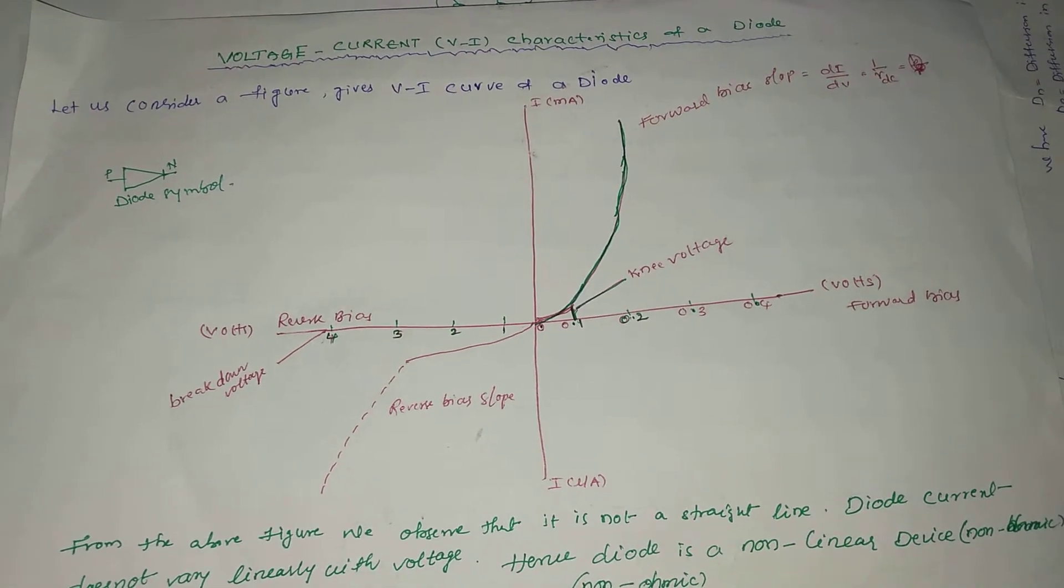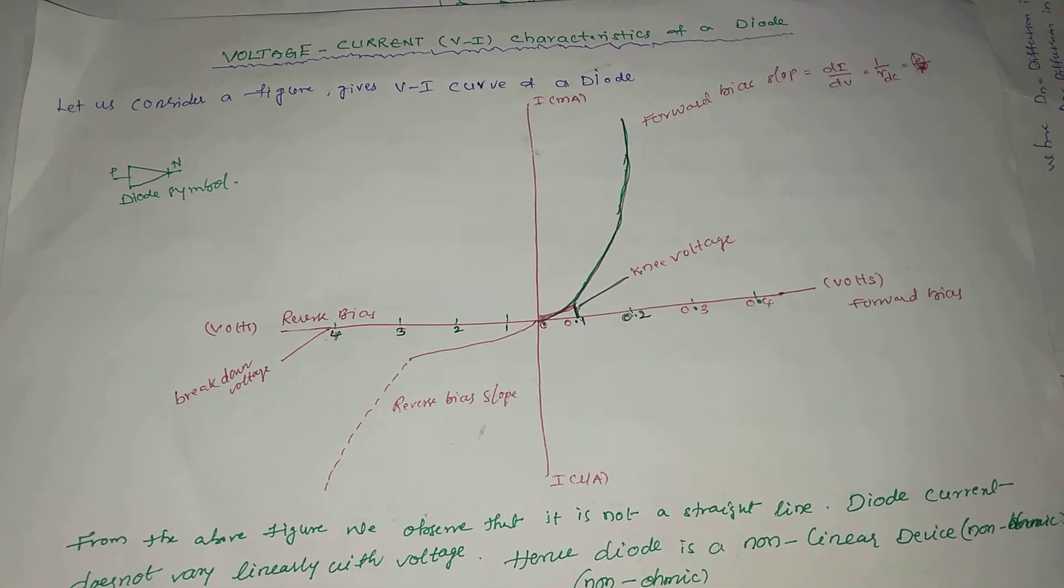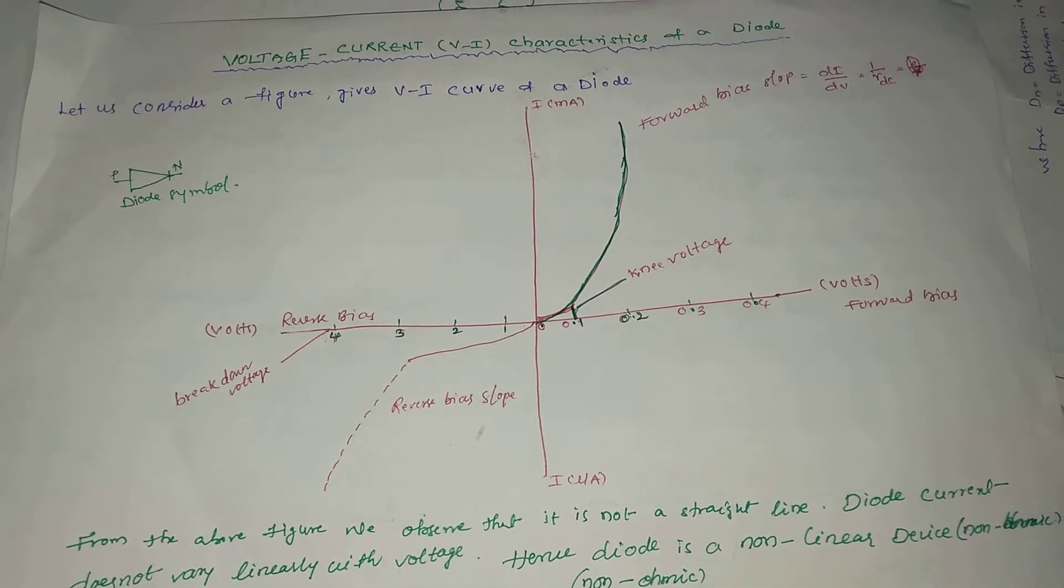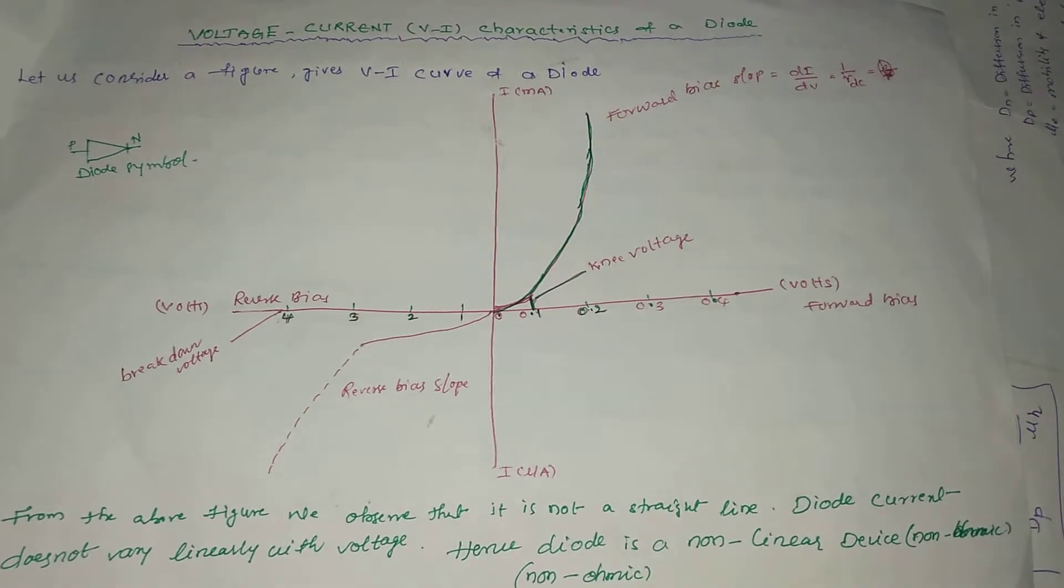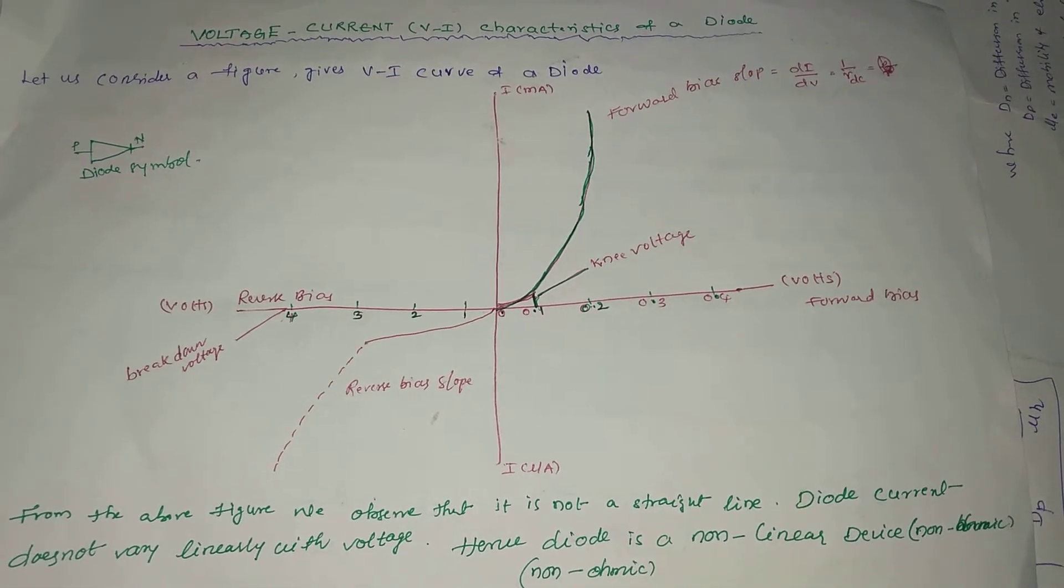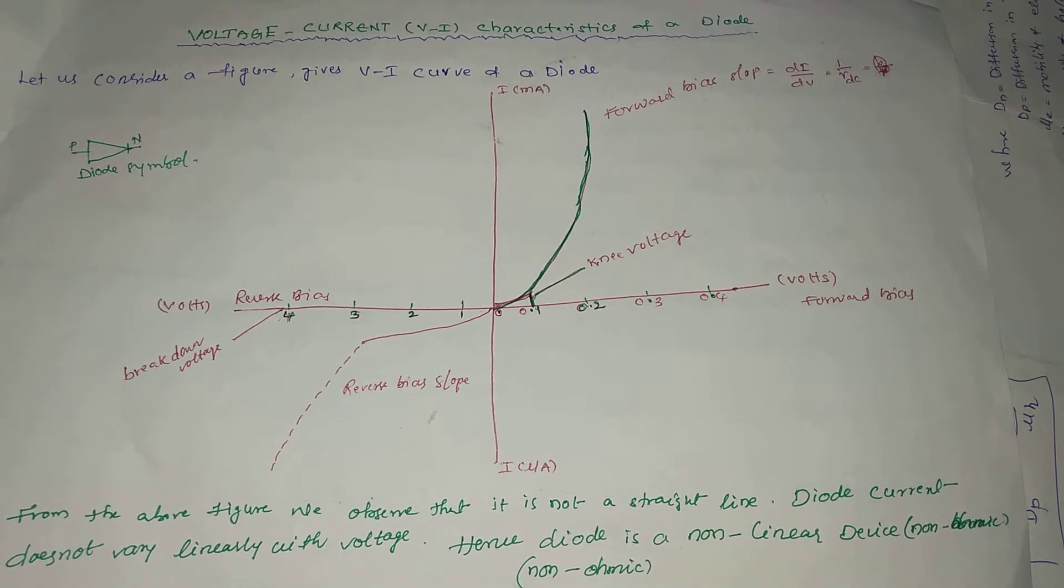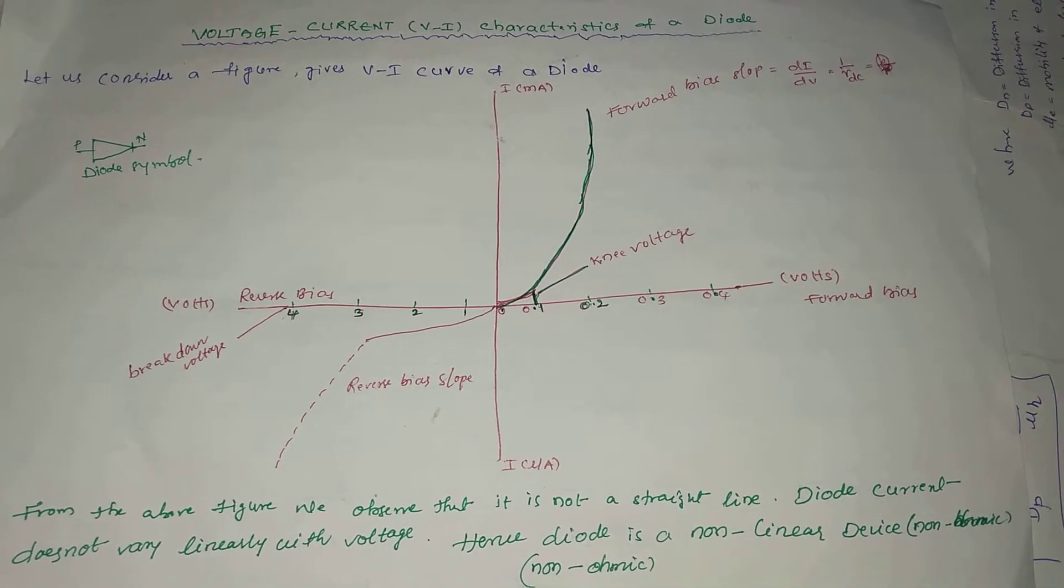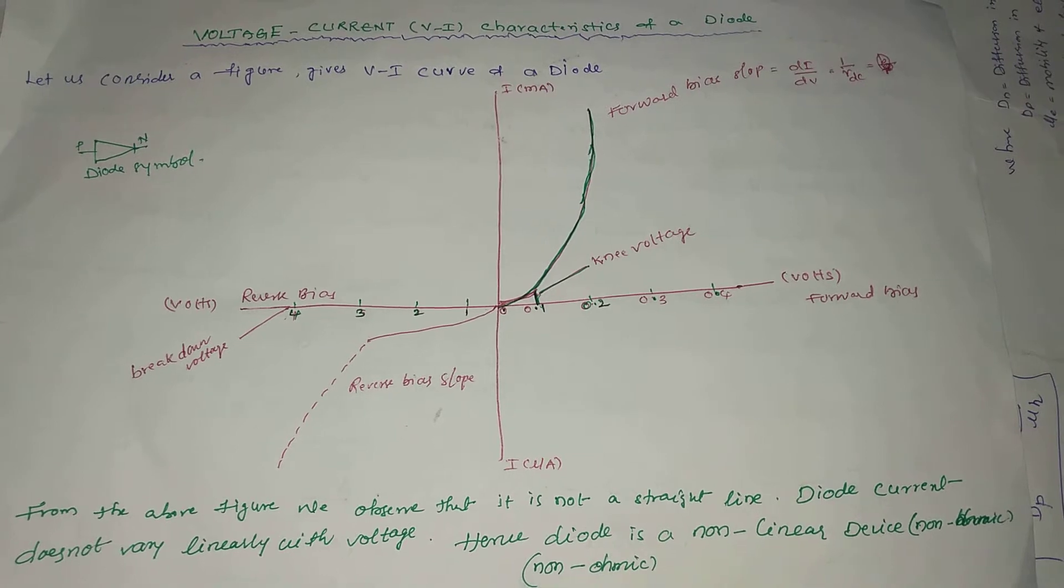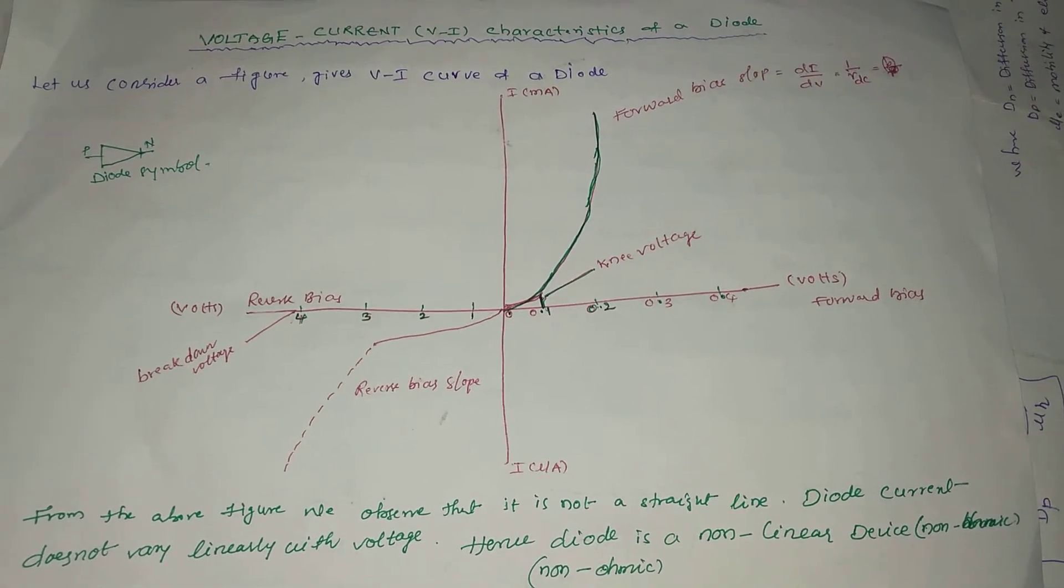Let us consider a figure which gives VI curve of a diode. From the figure, we analyze X-axis and Y-axis. On X-axis we draw voltage and Y-axis we consider current.